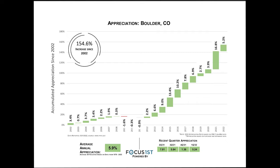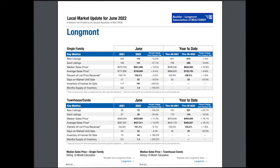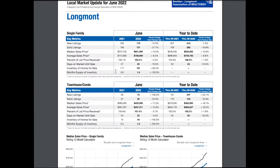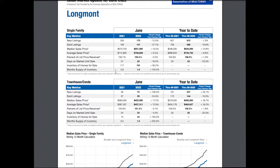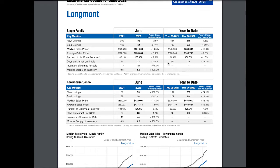I also get stats from my local Realtor association — new listings, sold listings, all the different things coming on the market, whether up or down, and year-to-date numbers. Property prices are still increasing overall, though we are seeing some home prices come down because homes are still being over-listed.